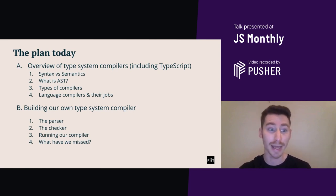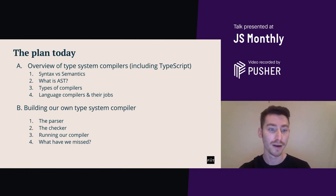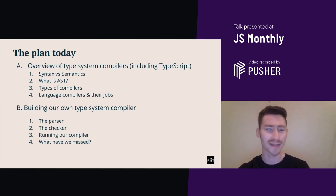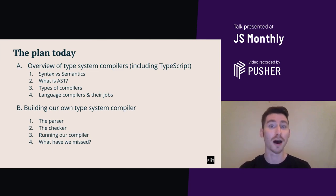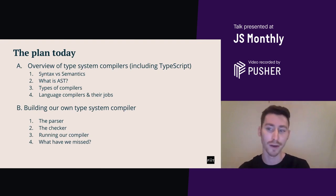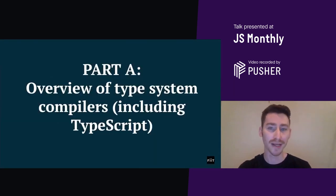And then Part B — we'll be building our own type system compiler, which looks at the parser, the checker, running our own compiler, and finally what have we missed. That's going to be having a look at the things that ours does not do that most other compilers would do. So let's start with an overview.